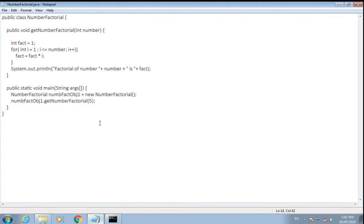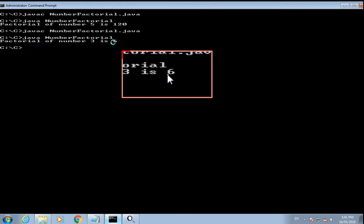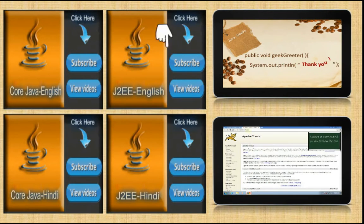If we change that 5 to 3, we'll have to compile it again and answer should be 6. Yes, factorial of number is 6. That's it. Thank you for watching my video. Please like, share, and subscribe for more videos.